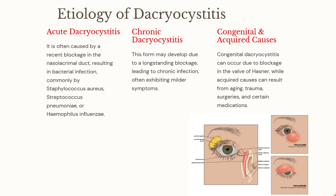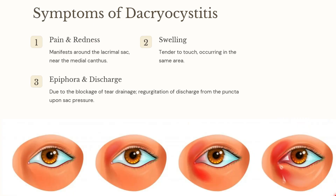Symptoms or clinical features: the patient can experience pain and redness in the area around the lacrimal sac near the medial canthus, swelling in the same area which can be due to touching, epiphora due to blockage of tear drainage, and discharge from the puncta upon pressure over the sac.